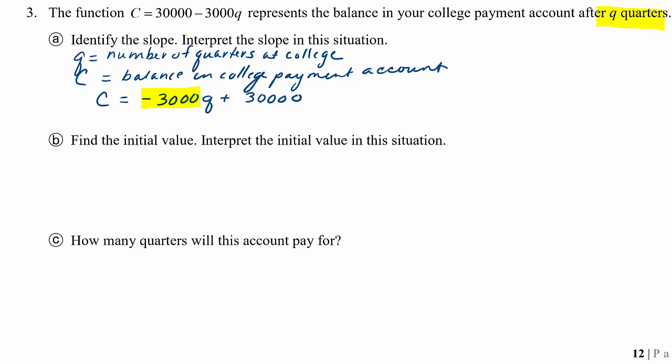Because again, you want to remember that slope is a rate. So just saying 3,000 doesn't give us enough information. Take a look at the input variable, number of quarters. So our units for slope will be dollars per quarter.